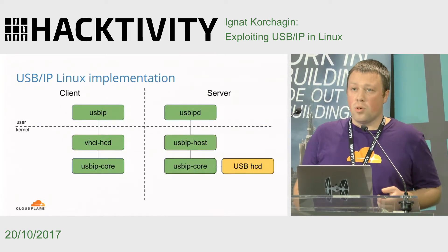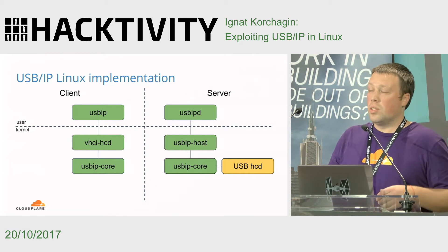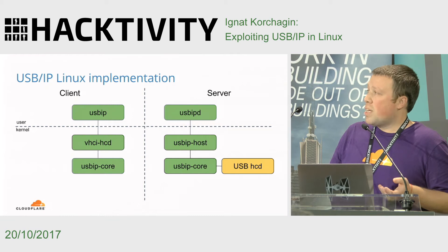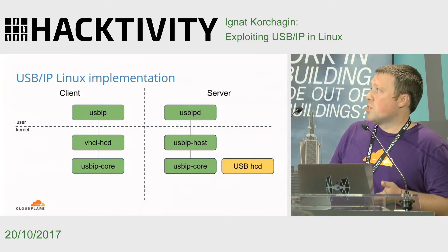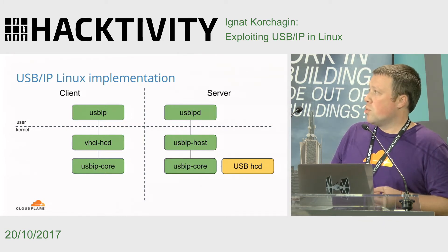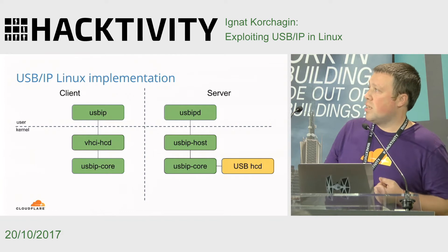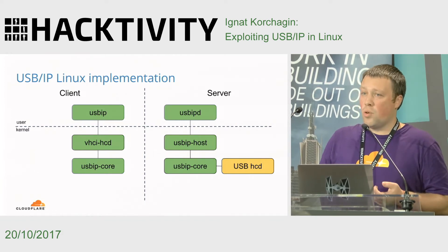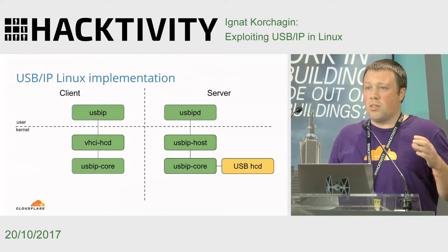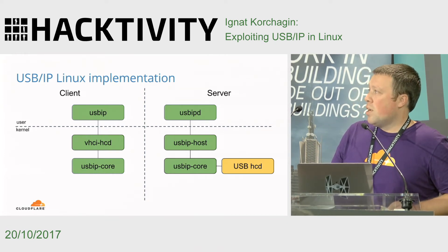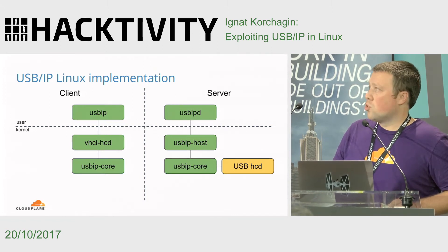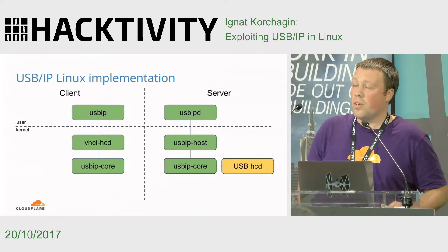Let's take a brief look at how this architecture maps to Linux components. We have user space components and kernel space components shown in green. In user space on the server side you have a daemon called USB/IPD, and then two kernel modules: USB/IP host and USB/IP core. On the client side you have the USB/IP client utility in user space, the same USB/IP core module, and VHCD — the Virtual Host Controller Driver — which is a virtual USB host on the client side.